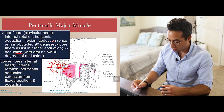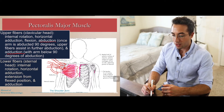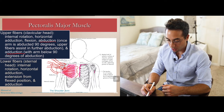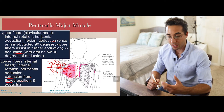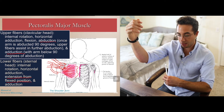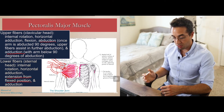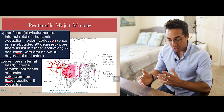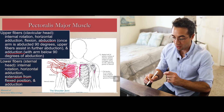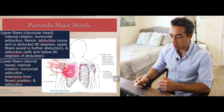The lower fibers of pectoralis major — the sternal head — also contribute to internal rotation and horizontal adduction. They additionally contribute to extension from a flexed position: if the shoulder joint is already flexed, these lower fibers are stretched, and by contracting them you pull the humerus back down into extension from that flexed position. The lower fibers also cause adduction. Think about the line of pull and where the humerus is positioned to deduce all of these actions.